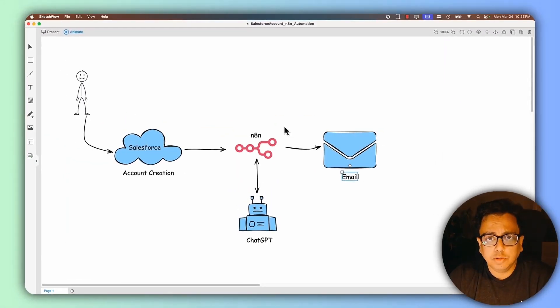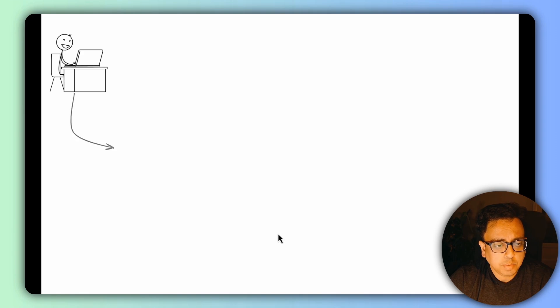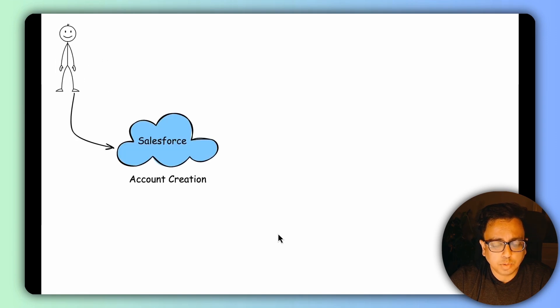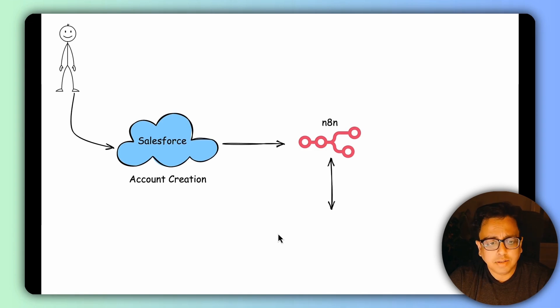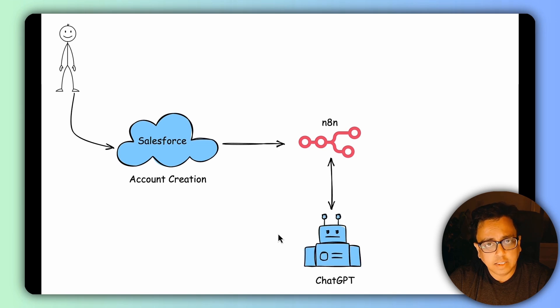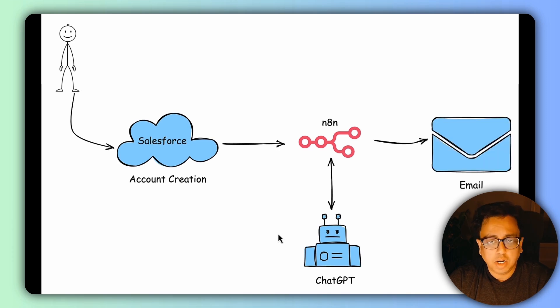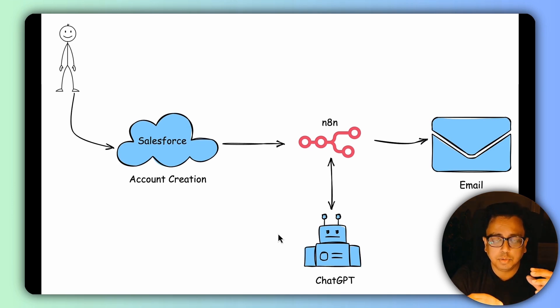Let's understand the use case before we implement it. The user will insert an account record in Salesforce. The moment the account record is created, it will trigger the automation in N8N. The automation will pass a few account attributes to ChatGPT and gather some information from it. Finally, it will consolidate that information and send an email to the proper audience. A very simple use case, but the intention is to demonstrate how to integrate Salesforce with N8N and bring automation to life.